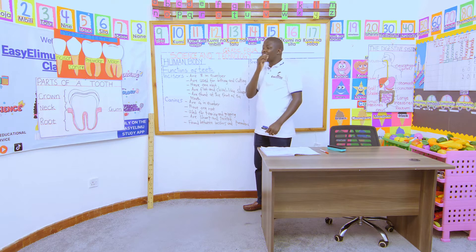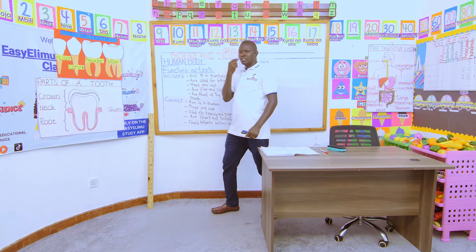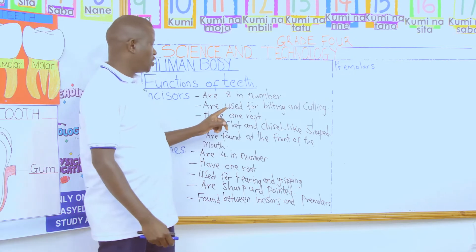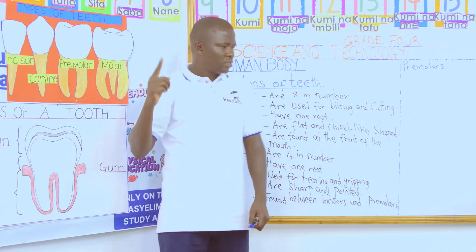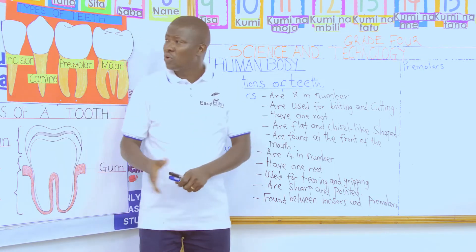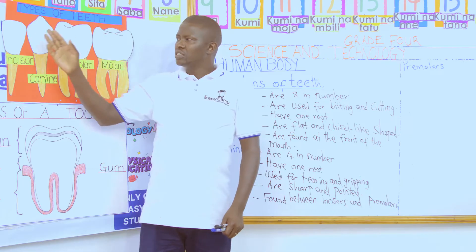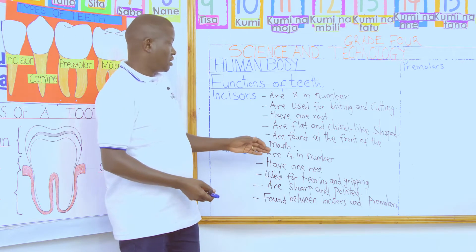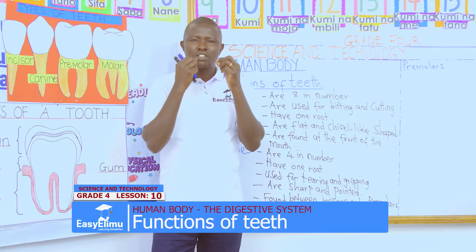In terms of their function, we use the incisors for biting and for cutting. If you want to cut something, you use the front teeth, which we call incisors. When we look at them in terms of their shape, they have one root, and they look flat at the top — so we say they are flat and chisel-like in shape. They are found at the front part of our mouth.